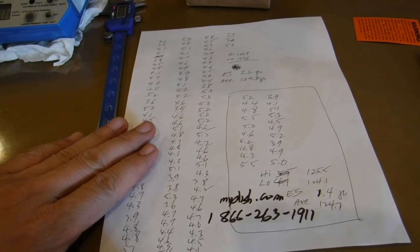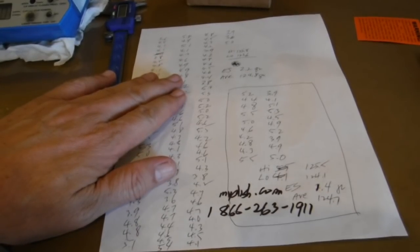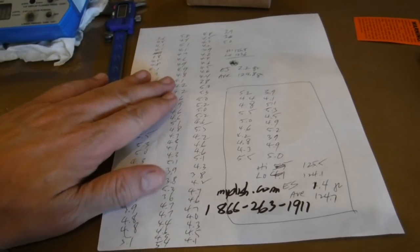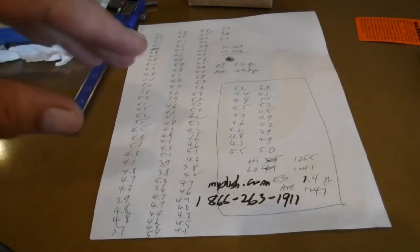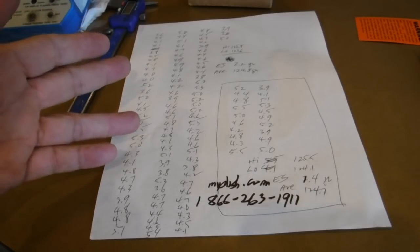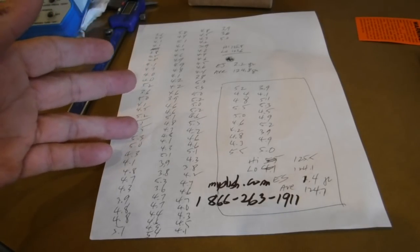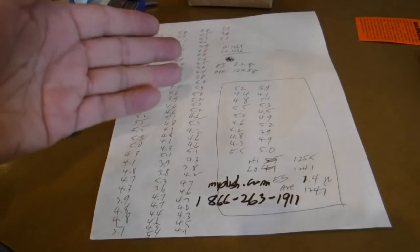So, here are the results of the weighing of the brass, and you might wonder, well, a lot of videos we take 20 random casings out of 100, weigh those, get the high and low, and then the extreme spread, the average, and that's representative of the whole hundred, right?